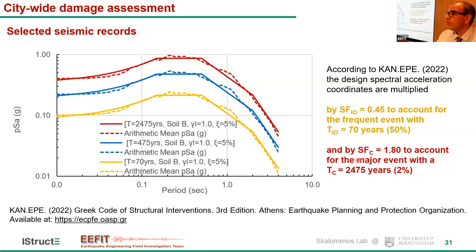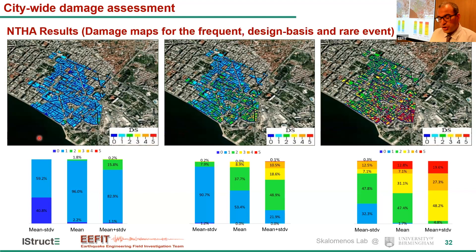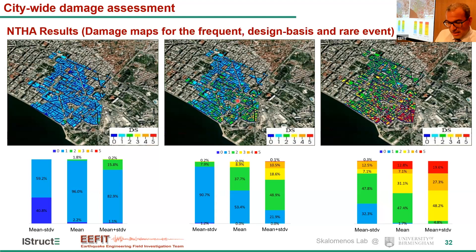These figures illustrate the damage maps for the frequent, design basis, and rare events. Mean values of damage states for each building are provided plus or minus one standard deviation. For the design basis event, results are very similar to what was observed during the 1978 Thessaloniki earthquake, as the earthquake response spectrum is close to the design basis event. At plus one standard deviation, some collapse cases and quite severe damages are expected for 10% of buildings. During the rare event, nearly 20% of buildings suffer damage, with the worst-case scenario being very devastating.